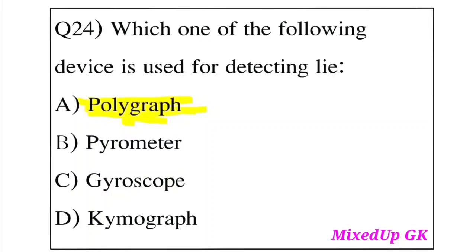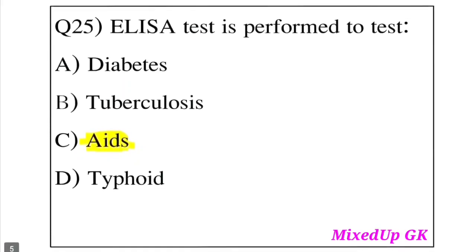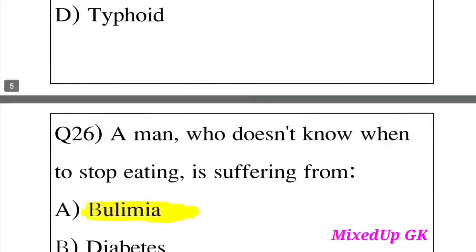Question 25: ELISA test is performed to diagnose which disease? Option A: Diabetes. Option B: Tuberculosis. Option C: AIDS. Option D: Typhoid. The answer is Option C, AIDS.